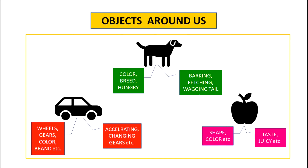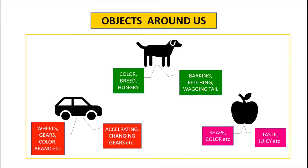If we take an example of a car, the attributes of car can be wheels, gears, colour, brand, etc., and its behaviour can be accelerating, changing gears, etc. Now let us take another example of apple. The various attributes of apple can be shape, colour, etc., and its behaviour can be taste, juicy, etc.